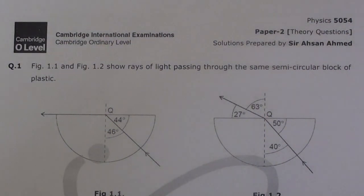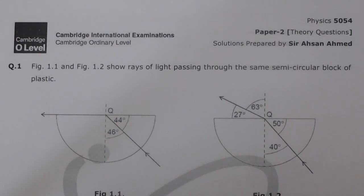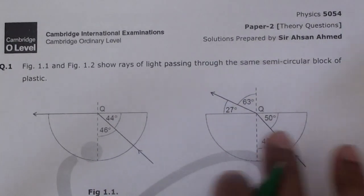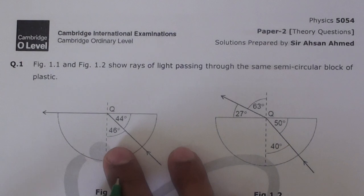Alright guys, light questions in very dim light though. Let's see how we solve them. We have this question from a past paper where it says Figure 1.1 and Figure 1.2 show rays of light passing through the same semicircular block of plastic.